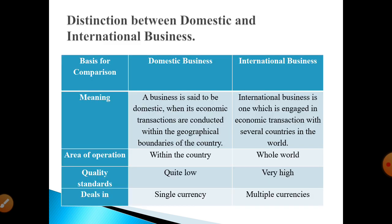Next is the distinction between domestic and international business. In terms of meaning: a domestic business is one where economic transactions are conducted within the geographical boundaries of the country. International business is where economic transactions happen with different countries across national boundaries. For example, a transaction happening within India is domestic business, while transactions with different countries is international business.